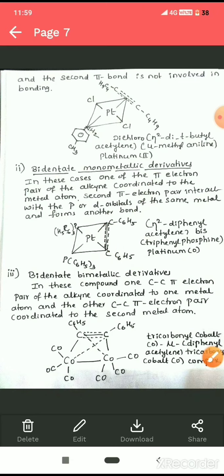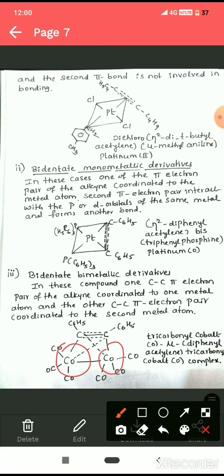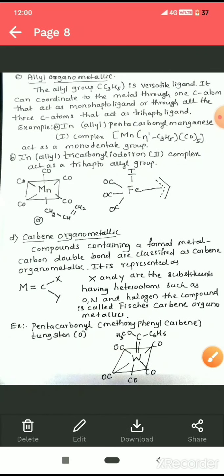The third type is bidentate bimetallic derivatives, where the two pi electron pairs are donated to two different metals. One C–C pi electron pair of the alkyne is coordinated to one metal atom, and the other pi electron pair is coordinated to a second metal atom. Example: a complex containing two cobalt ions where each cobalt receives one pi electron pair from the alkyne.